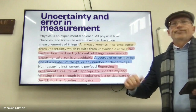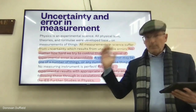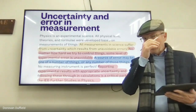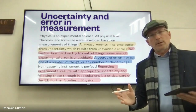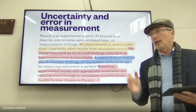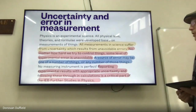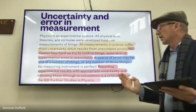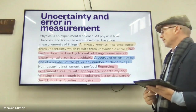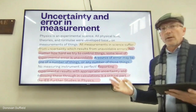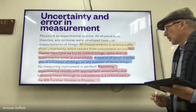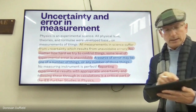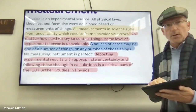No matter how accurate or precise your measurement is, there's going to be uncertainty. No matter how hard we try to control things, some level of experimental error is there. The source of error may be a number of things, which we're going to explore. And it's critically important that when one reports one's results, one does so in such a way that you have calculated the uncertainty in your measured values.